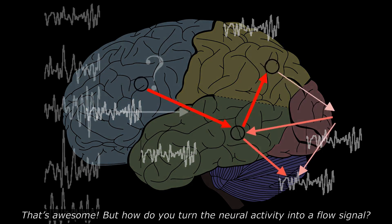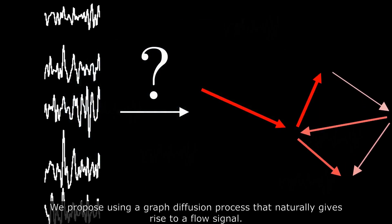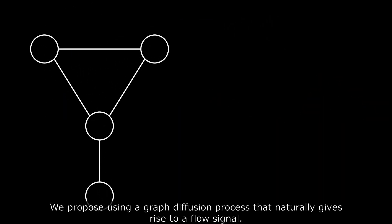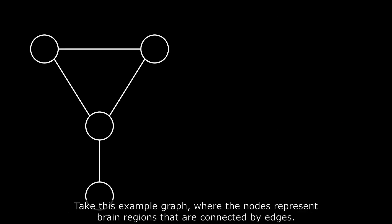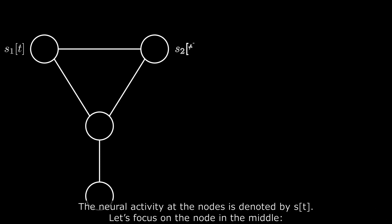But how do you turn neural activity into a flow signal? We propose using a graph diffusion process that naturally gives rise to a flow signal. This is an example graph where the nodes represent the brain regions that are connected by the edges. The neural activity at the nodes is denoted by st.